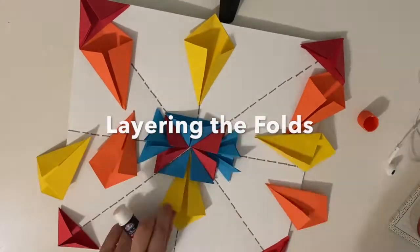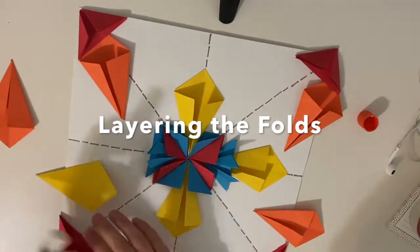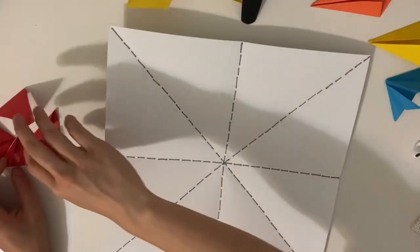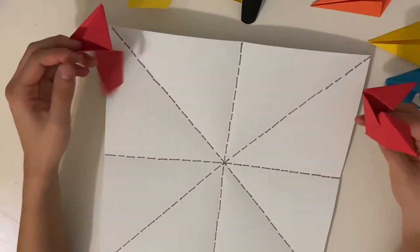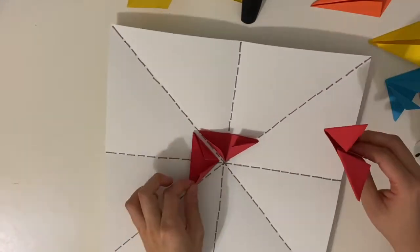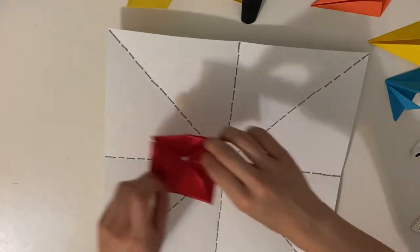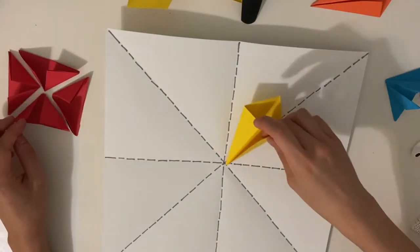Let's move on to layering and gluing down our folds. Maybe you want to put in our hat folds in the middle, or you want to put your kite folds.